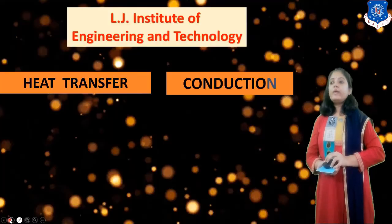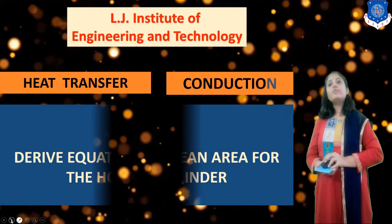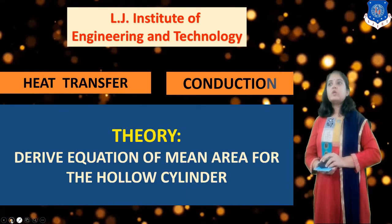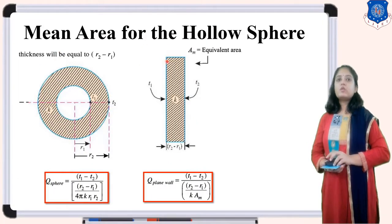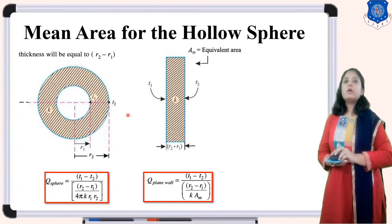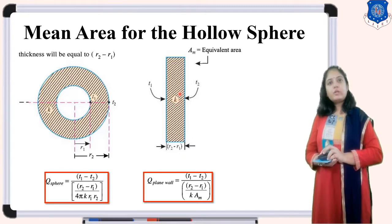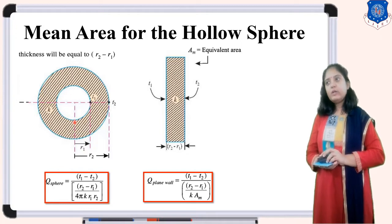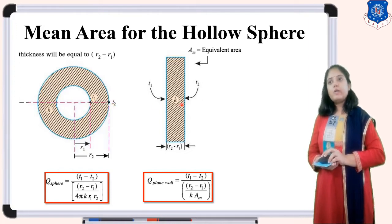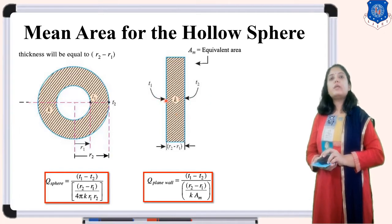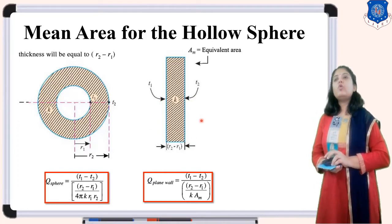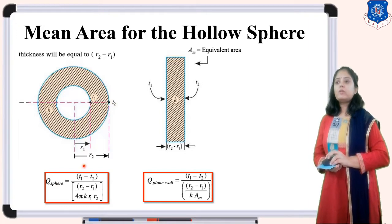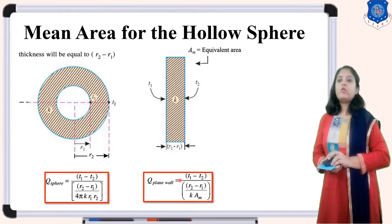Now the next topic: derive equation of mean area for the hollow sphere. We consider the hollow sphere and a plane wall for comparison, since 'mean' is defined with respect to another geometry. For the sphere, R1, R2, temperatures T1 and T2, and conductivity K. For the plane wall, temperatures T1 and T2, thickness R2 minus R1, and conductivity K. The equation for the sphere is Q_sphere equals (T1 minus T2) divided by (R2 minus R1)/(4πK·R1·R2), and for the plane wall Q equals (T1 minus T2) divided by (R2 minus R1)/(K·AM).